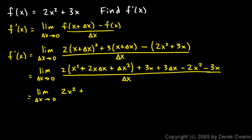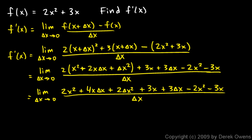Distributing the 2 gives 2x² + 4x·delta x + 2(delta x)², then plus 3x + 3·delta x, minus 2x² minus 3x, all over delta x. Now we can simplify: the 2x² cancels with the minus 2x², and the 3x cancels with the minus 3x.